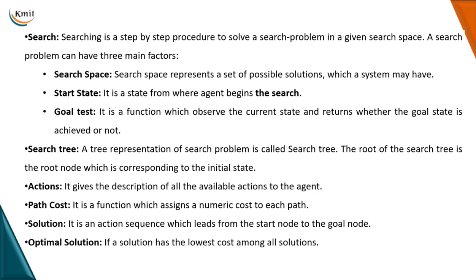Apart from that, we also have the term search tree. The search space is usually represented as a tree, so we call it a search tree. We have the root node, which is the initial node, and exit paths which are our goals. Action is the description of all available actions towards the agent. Path cost represents a function that assigns a numeric cost to each path. A solution is when a sequence of actions is completed from the start node to the goal node. We may have multiple solutions, but we consider the optimal solution — the one with the lowest cost.